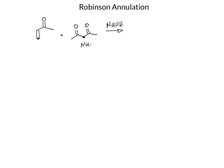And remember, for an alpha-beta unsaturated carbonyl, it is the beta carbon that is going to serve as the electrophile. And so the first reaction that's going to take place is a Michael addition, or a conjugate addition. And so I'm going to have a new carbon-carbon bond formed between the alpha carbon and the beta carbon of my methylvinyl ketone.